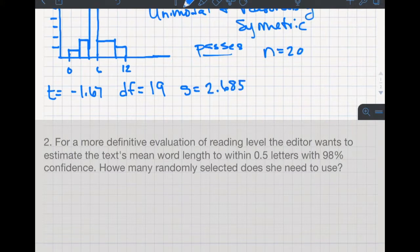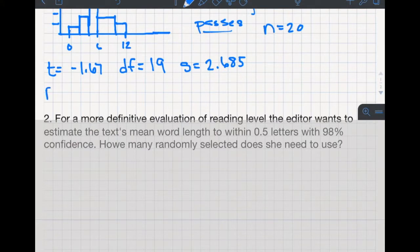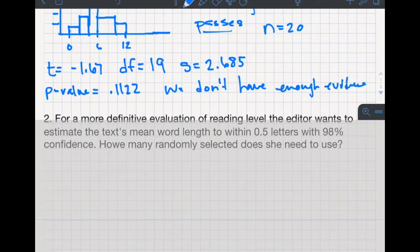We're going to add in our p-value, so the p-value equals 0.1122. This is obvious that with a p-value of 0.1122, we're really not going to have enough evidence. We don't have enough evidence to say that the average word number is any different from 6.5.